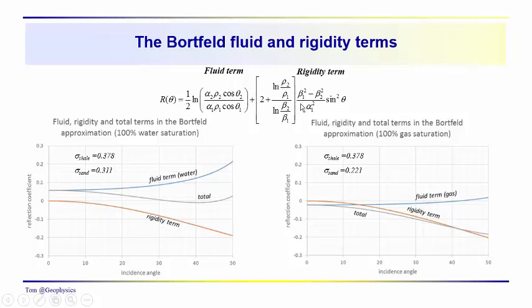The shear term, the rigidity term - the shear wave velocities are generally associated with changes in Poisson's ratio. Changes in shear wave velocity are not influenced by the presence of fluids, gas or water. So this term over here, with the shear wave velocities in these two terms in addition to the density, is more reflective of the rigidity of the rock.